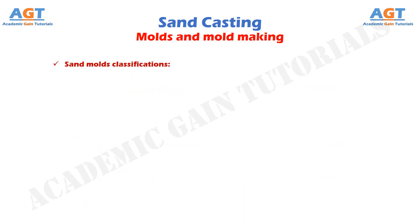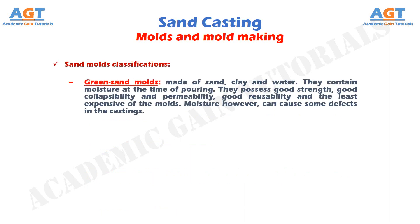Sand molds classifications. Green sand molds are made of sand, clay and water. They contain moisture at the time of pouring. They possess good strength, good collapsibility and permeability, good reusability and are the least expensive of the molds. Moisture, however, can cause some defects in the castings.